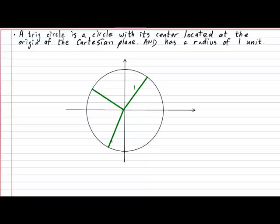And finally, it also means that this line segment measures one unit because that is the circle's radius. And this illustrates the second part of the definition that the radius is equal to one unit for the trig circle.